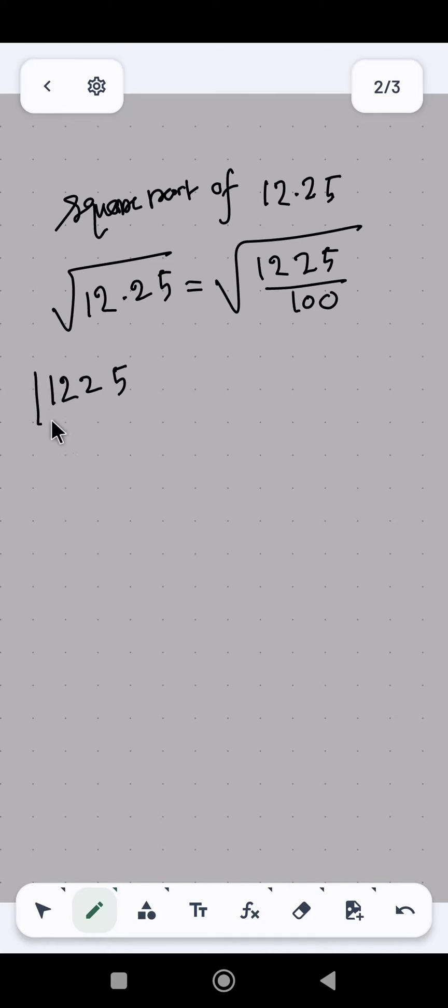We can see that it can be divisible by 5, so 5 into 245, 5 into 49, 5 into 5. So 5 into 49, now 7 into 7. So we can see that square root of 1225 which is basically equals to square root of 5 into 5 into 7 into 7.